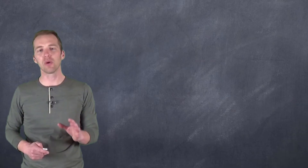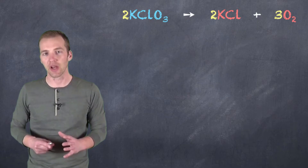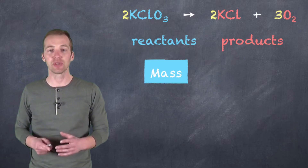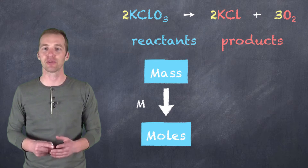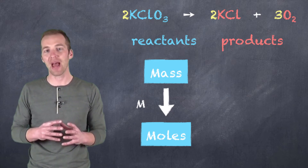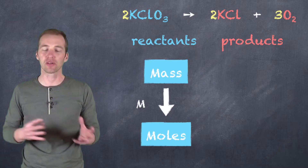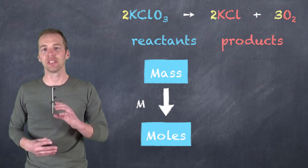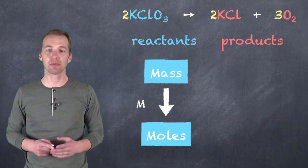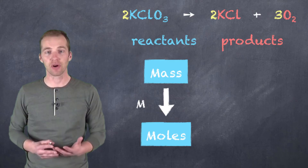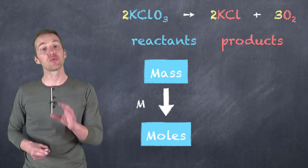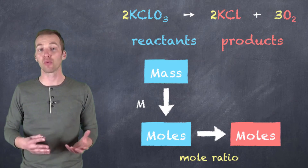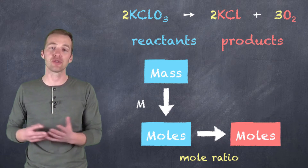In stoichiometry, what we're going to do typically in our introduction is start with a mass of a particular reactant. We then have to convert it to moles, because moles is the common currency of chemistry. The point is that in order to compare reactant to reactant, or reactant to product, we're dealing with a balanced chemical equation relating to number — so we must convert our mass into moles using molar mass. Then, our mole ratio comes in: we use the mole ratio from the balanced chemical equation to convert the moles of our reactant to the moles of our product.